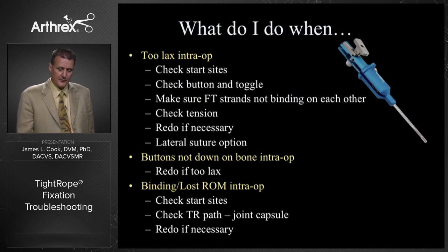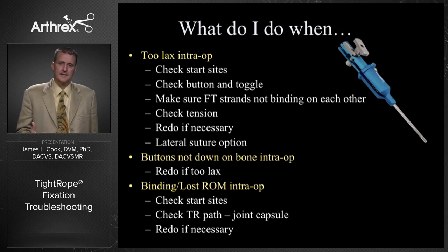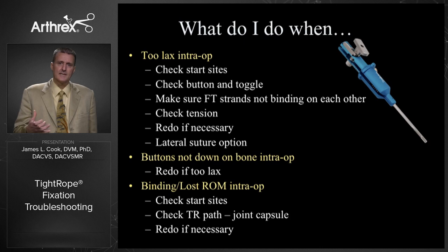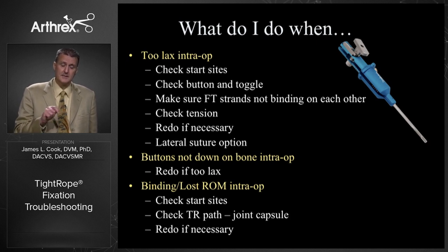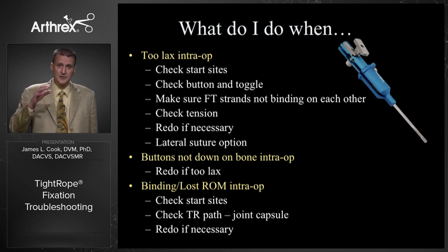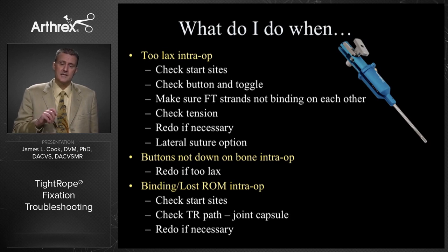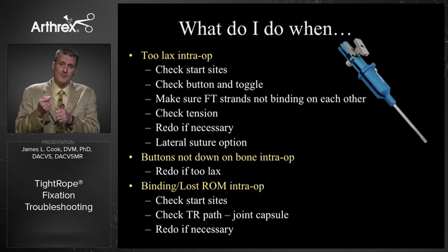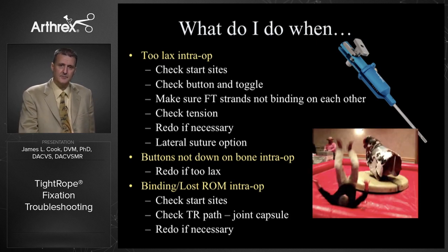If that's not happening and it's too lax — you're not getting stability intraoperatively — go back and check those start sites. Nine times out of ten, you've mis-palpated, things are in the wrong place, and you don't have the best isometry. If it's not the start site location, it may be the button and toggle not down to bone: soft tissue interposing, the toggle not flipped right, or exposure not good enough. Also make sure the fiber tape strands aren't binding on one another — with four strands coming across the area, one could have a loop and be bound by another, causing instability. The bottom line is: get over your ego and redo it if necessary.